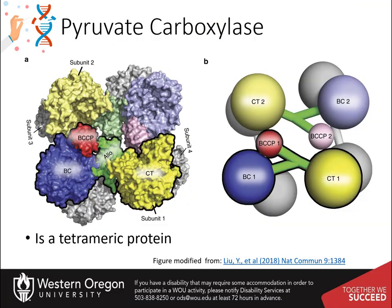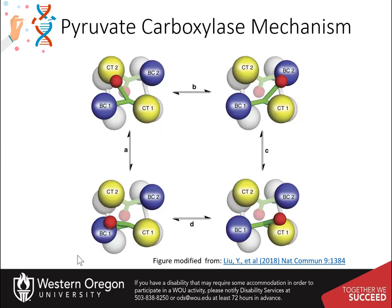The overall structure of pyruvate carboxylase is a tetramer that contains four functional protein subunits. Two subunits are shown in color on this diagram, with the other two indicated in gray in the background. Each subunit contains a biotin carboxylase domain, shown in blue; a carboxyltransferase domain, shown in yellow; and the biotin carboxyl carrier protein, the BCCP domain, shown in red and green.